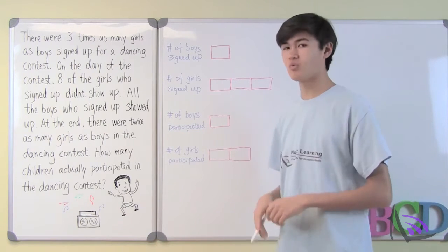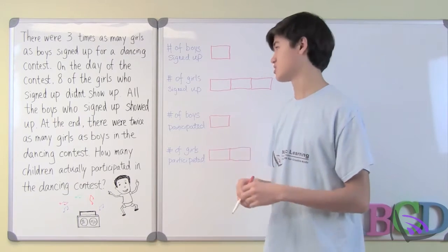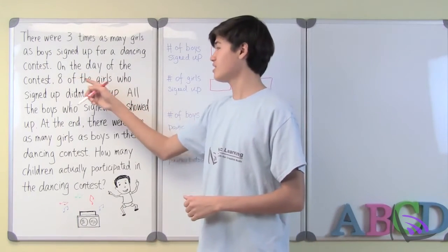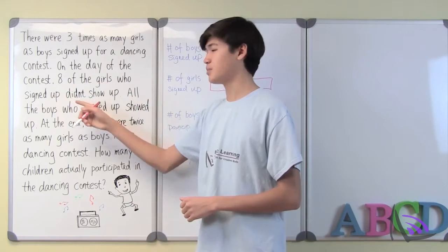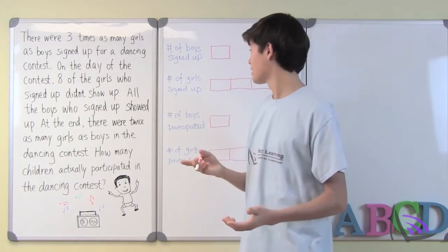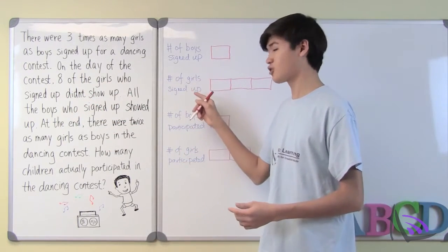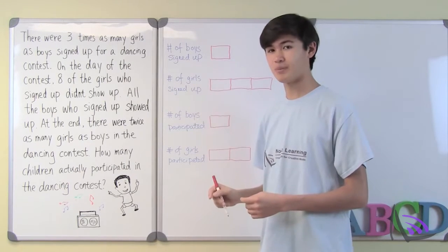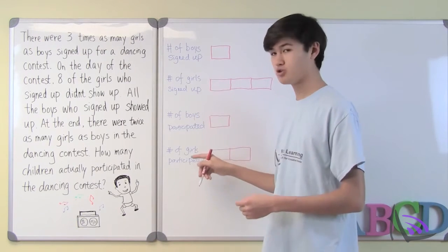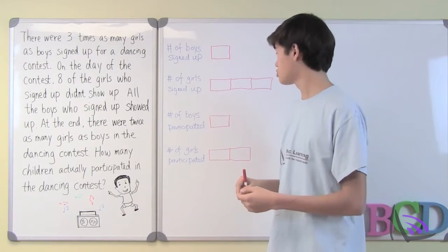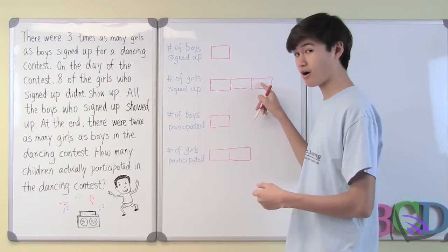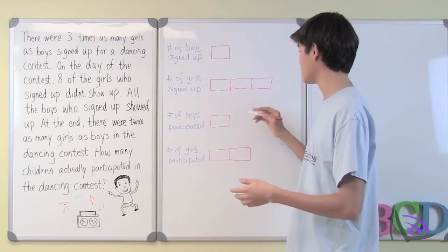Now let's look at one more piece of information the question tells us. It tells us that eight of the girls who signed up didn't show up. So what does this mean? It tells us that the number of girls who signed up is eight more than the number of girls who participated, which means that this bar has to be equal to eight.